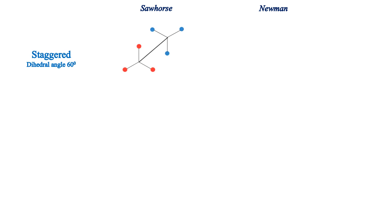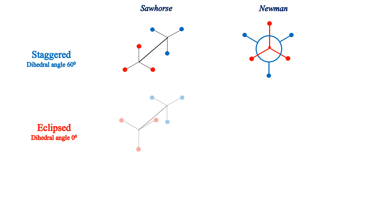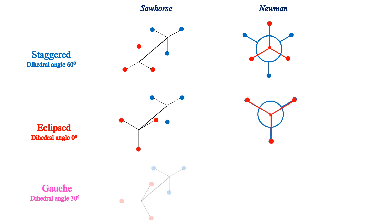Let us have a quick look at different conformations in sawhorse and Newman projection formulae: staggered, eclipsed, and gauche.